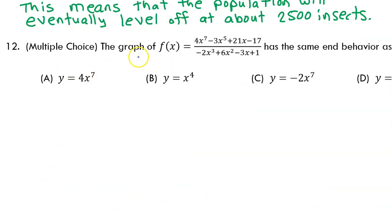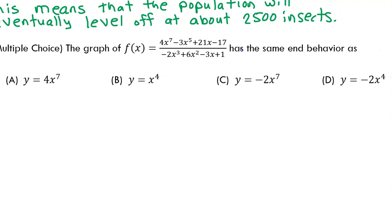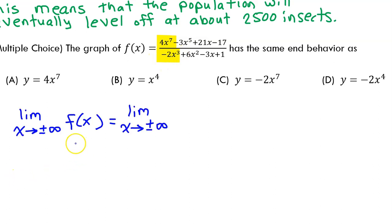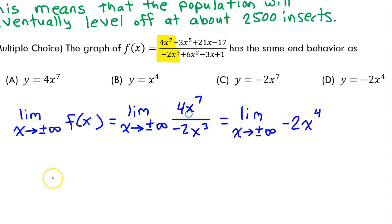Number 12 is a multiple choice question. The graph of f of x is given by this expression — it has the same end behavior as which of these four expressions? The end behavior of f of x is determined by the leading terms of the numerator and the denominator. The limit as x approaches plus or minus infinity of f of x equals the limit of 4x to the seventh power over negative 2x to the third power, which simplifies down to negative 2x to the fourth power. So the graph of f of x has the same end behavior as answer choice d.